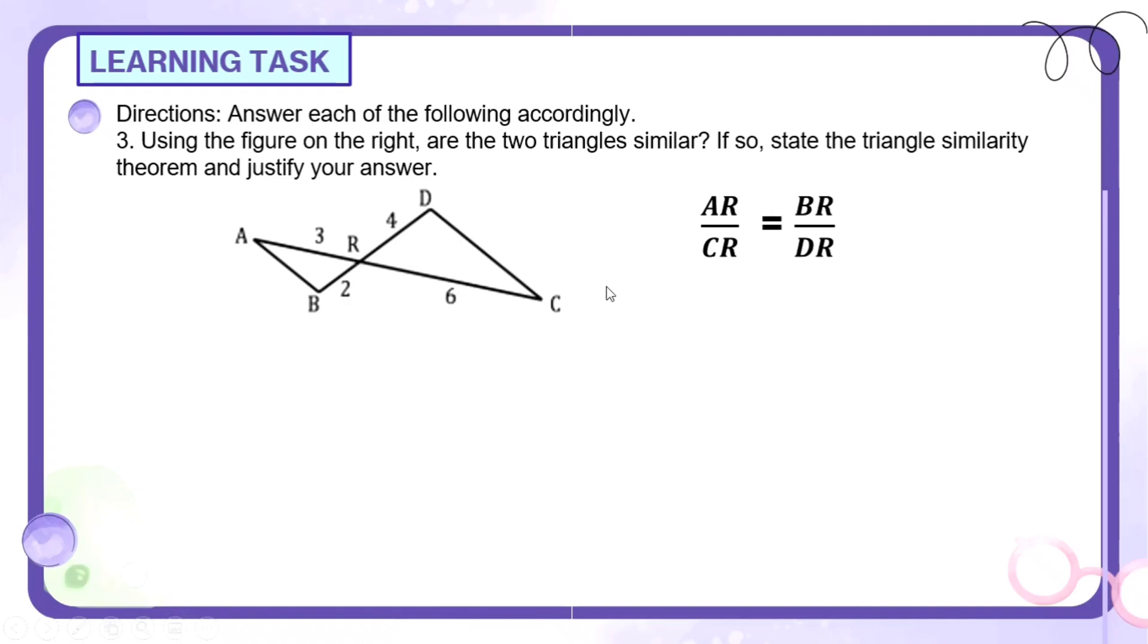So tignan natin kung proportional yung kanyang mga sukat. So substitute natin yung AR over CR. So AR is 3, then CR is 6. Kaya meron tayong 3, 6. And then yung BR. So ito yung BR is 2, and yung DR is 4. So tignan natin. Para malaman natin kung proportional, i-cross multiply natin sila. 3 times 4 is 12, and 6 times 2 is 12. So equal sila, meaning they are proportional.